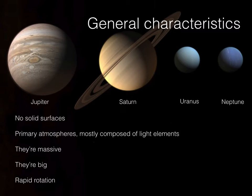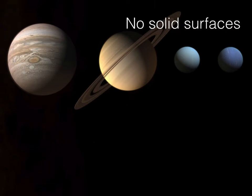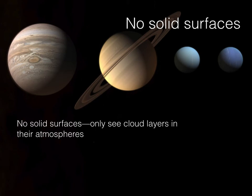There will never be a secondary atmosphere for Jupiter, Saturn, Uranus, and Neptune because they're all holding on to their primary atmosphere. They're very massive, very large, and they rotate very rapidly. The first point — no solid surfaces — is really important to understand. We're only looking at the actual cloud layers in their atmospheres. There is no surface; it's clouds all the way down until you reach the cores and mantle regions.